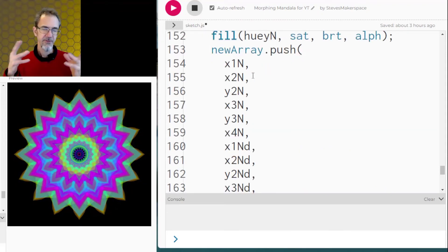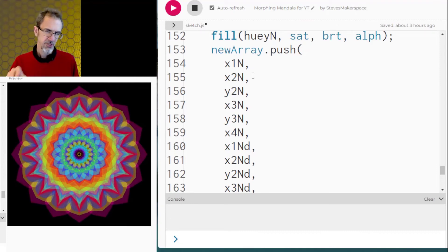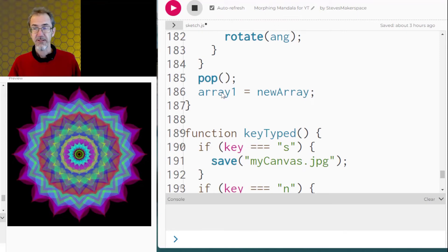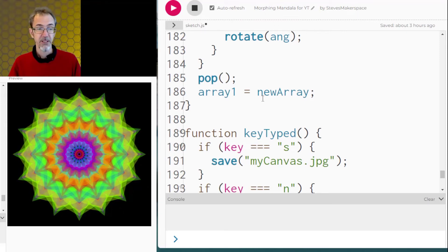And then the results of all of this new information gets put into a new array pushed in. We draw the petals here and then right at the end we replace the original array with this new array and then start over.